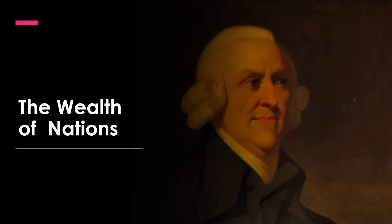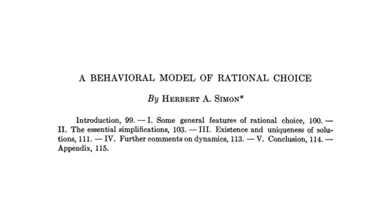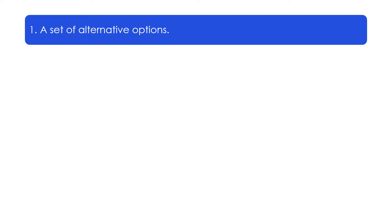First, what is Rational Choice Theory? As the name suggests, decision-makers are rational. Adam Smith, who authored The Wealth of Nations, famously argued that people were rational utility maximizers, and economic behavior was motivated by self-interest. To answer what 'rational' means, in 1955 Herbert Simon published an article titled 'A Behavioral Model of Rational Choice' in the Quarterly Journal of Economics. In that article, Simon laid out six elements of a rational choice model. First, a set of alternative options — this is our choice set.